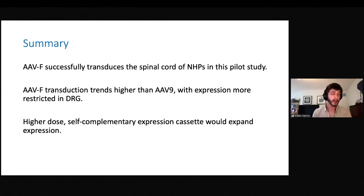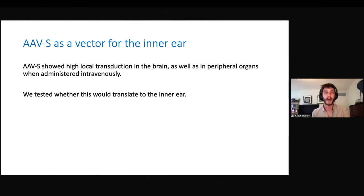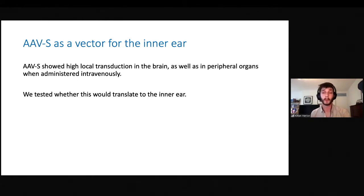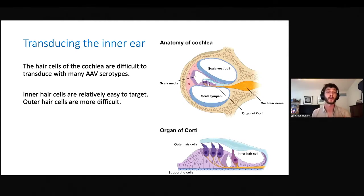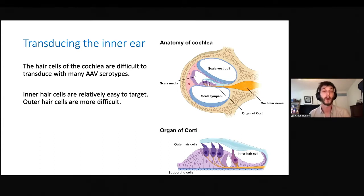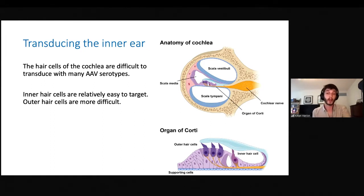So that's AVF. What about AVS? It didn't look excellent in the brain when administered intravenously, but it showed very high local transduction as well as in peripheral organs. So we were curious whether this would translate to the inner ear. The hair cells in the cochlea are the cells that sense sound. While there are serotypes that can transduce inner hair cells, it has been difficult to effectively transduce outer hair cells, which represent 75-80% of hair cells in the cochlea.